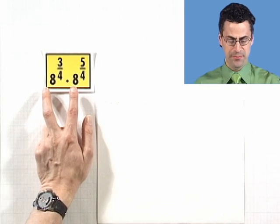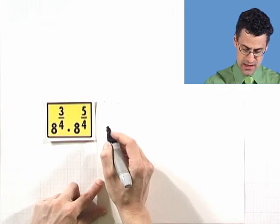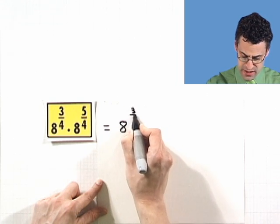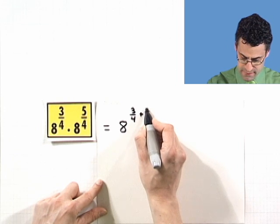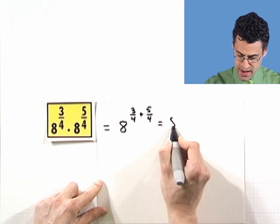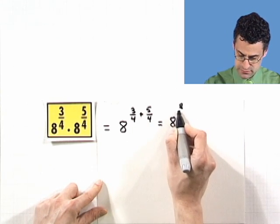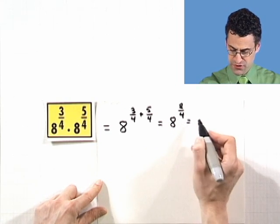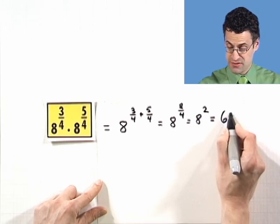So here, since the base is the same, I can add the exponents. So it's 8^(3/4 + 5/4) = 8^(8/4). Well, 8/4 is the same as 2, so this is 8^2, or 8 squared, which I happen to know is 64.